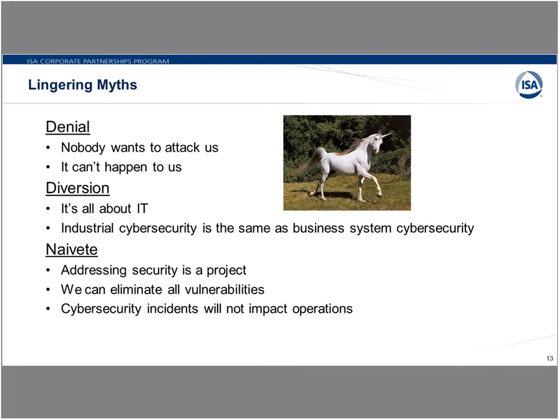The other myth is, it can't happen to us—this is the emergence of human denial. In the great wide world with all the billions of possible targets, people take their chances and hope that probability is on their side. That's a very risky position to take. Never underestimate the power of human denial. There's also a tendency to divert responsibility and say it's all about IT and let them figure it out. And even when people say they will address the industrial system, there is a tendency to think it can be addressed the same way as typical business IT, which is not the case.